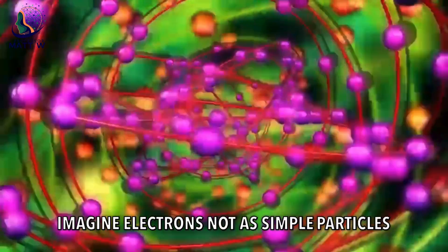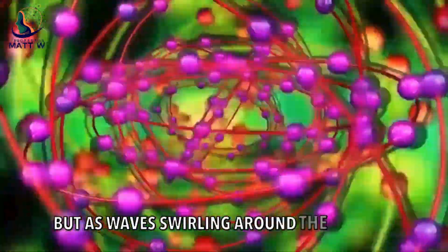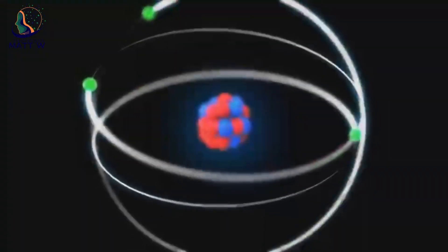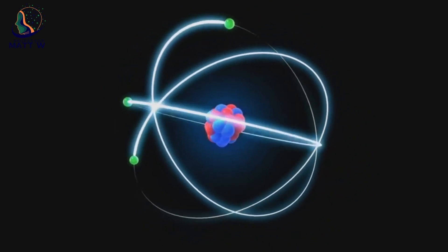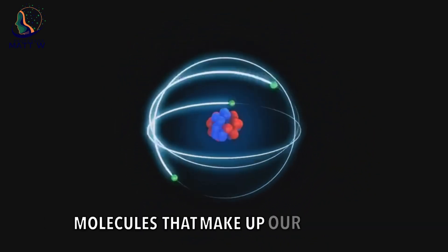Imagine electrons not as simple particles, but as waves swirling around the nucleus. These waves, called orbitals, dictate how elements interact and form the molecules that make up our universe.